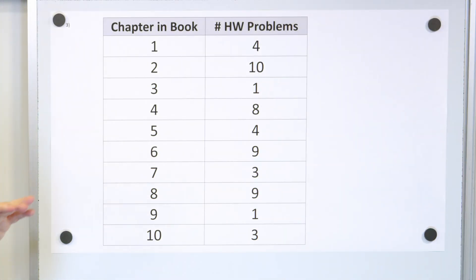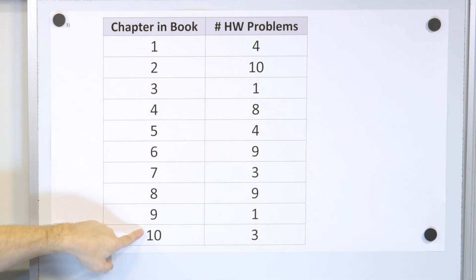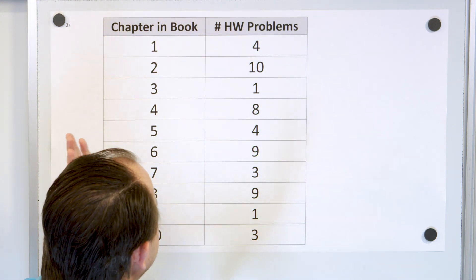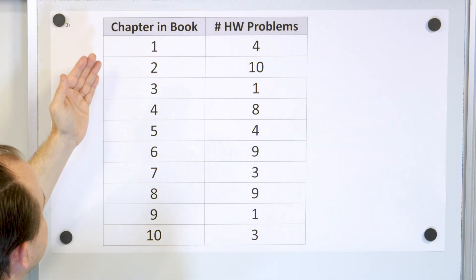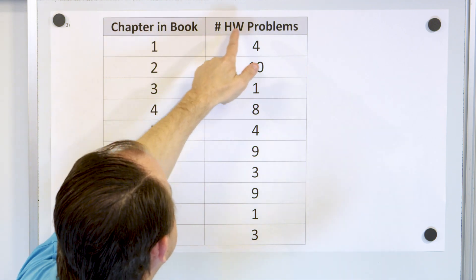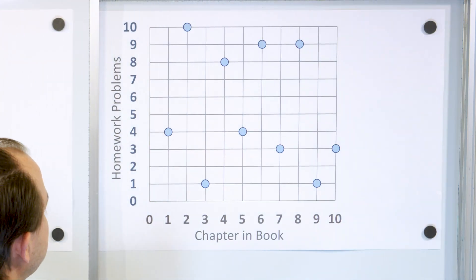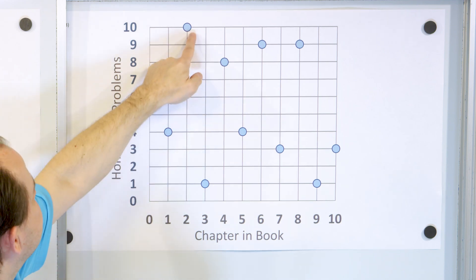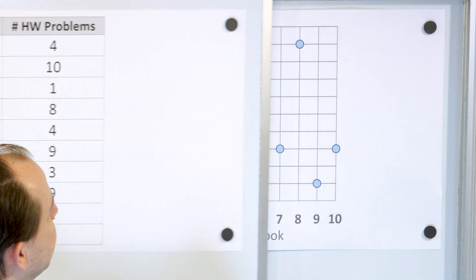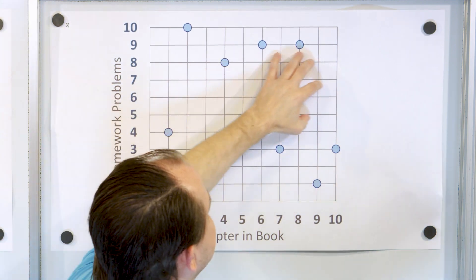Let's take a look at our last problem. Here we have a table of values — this is the chapter in a textbook, chapter one through chapter ten, and here are the number of homework problems at the end of each chapter. Let's see if the chapter number is related to the number of homework problems in the back of the book. You treat chapter as x and number of problems as y, and plot points like 1-comma-4, 2-comma-10, 3-comma-1, 4-comma-8, 5-comma-4, and so on for all the points.